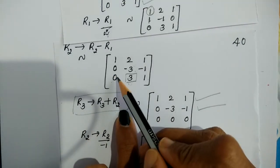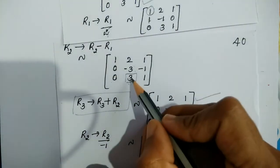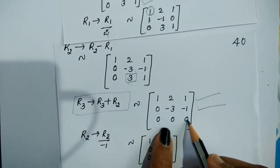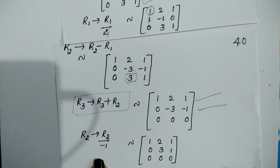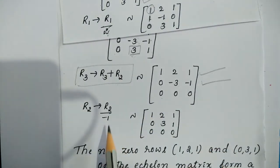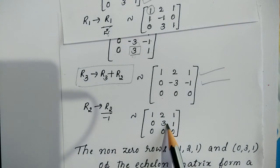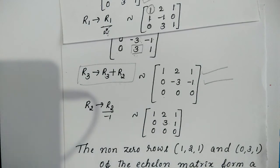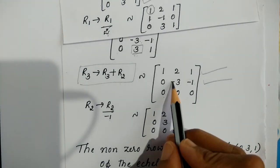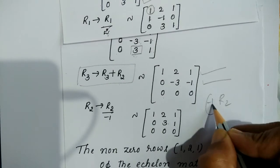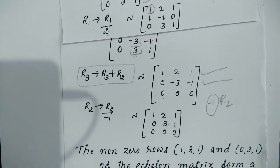Now the non-zero entry in row 2 is −3. We need to make the entry below it in row 3 equal to 0. Apply R3 → R3 + R2: 0+0=0, 3+(−3)=0, 1+(−1)=0. Row 3 becomes (0,0,0). We can also multiply row 2 by −1 to make it positive: row 2 becomes (0,3,1).